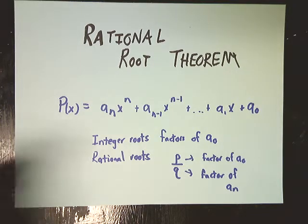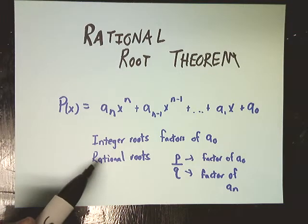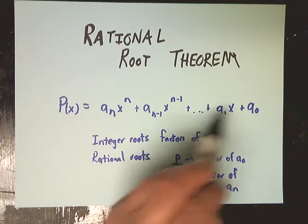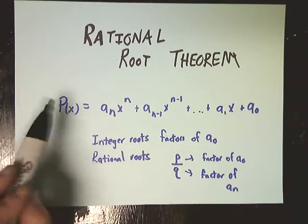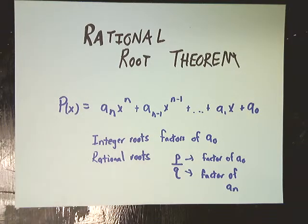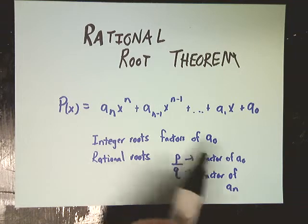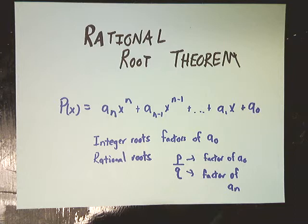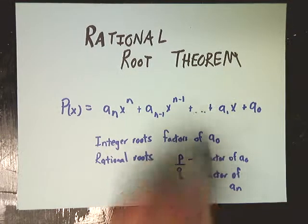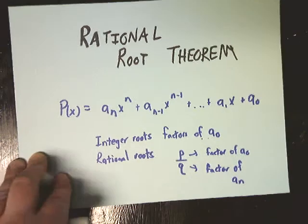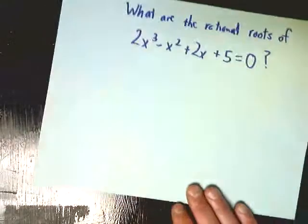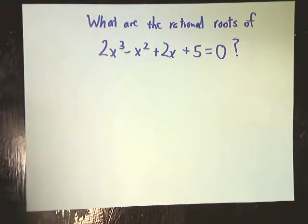If you have a rational root — something that's a fraction — it's going to be a combination of the factor of the last term divided by the factor of the first term. That can give you integer roots too, because one of the factors of the first term has to be 1. It's really helpful if you're in the field, but it's not super helpful just using it on its own — it's kind of outside of its context.